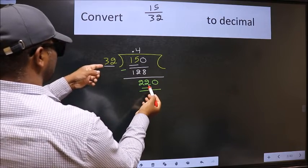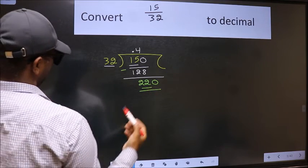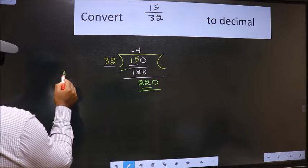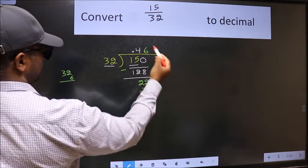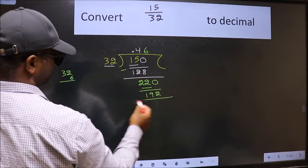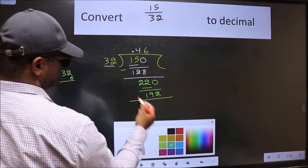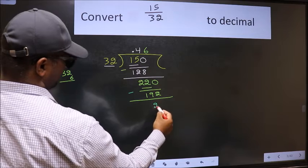A number close to 220 in 32 table is you take 32, 6. 32 times 6 is 192. Now we should subtract. We get 28.